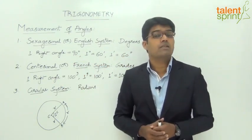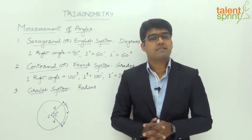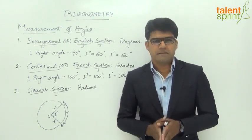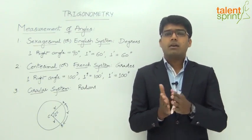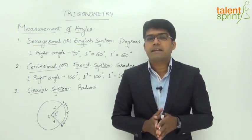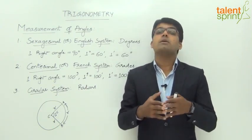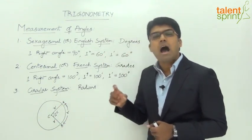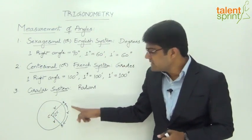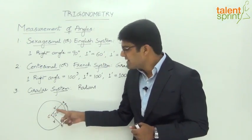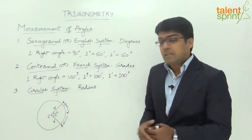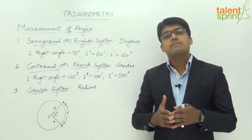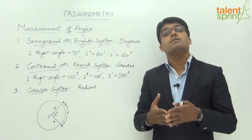The third system is the circular system of measurement of angle, which uses the unit of radians. One radian is the angle subtended at the center of a circle by an arc of length equal to the radius of that circle. For example, consider a circle with center C and radius R. If A and B is an arc and the length of this arc is also equal to R, then the angle subtended by this arc at the center will be equal to 1 radian.